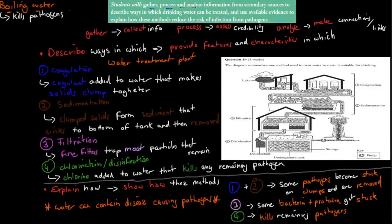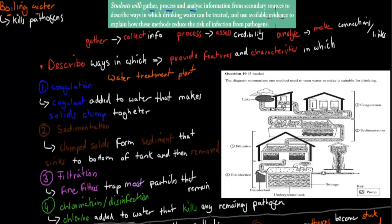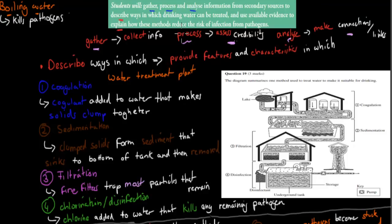The next topic says: gather, process, and analyze information from secondary sources to describe ways in which drinking water can be treated, and use available evidence to explain how these methods reduce the risk of infection from pathogens. 'Gather, process, and analyze' means collect information, verify it's valid, and make connections to the question. There are two methods: boiling water and a water treatment plant.